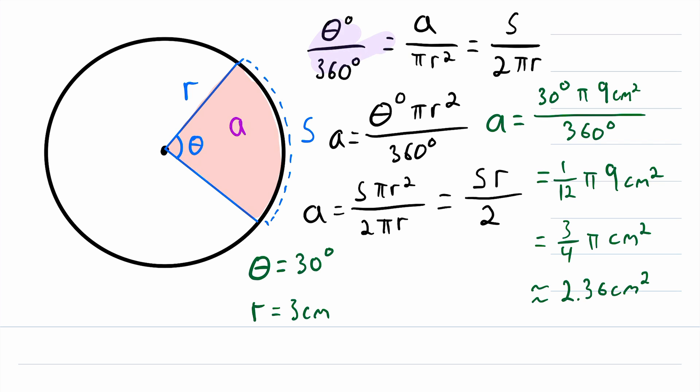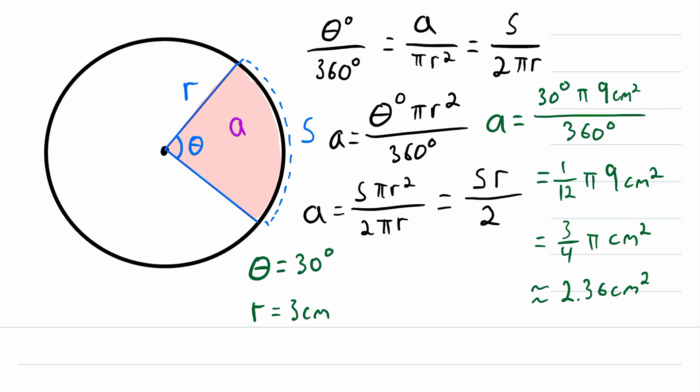And I should mention that this all works the same way if theta was an angle measured in radians. We would just have to make an adjustment to this ratio. So instead of theta degrees, it would be theta radians. And then instead of 360 degrees, it would be the total number of radians in a circle, which is 2 pi radians. So then you could go through the same exact process using radians.